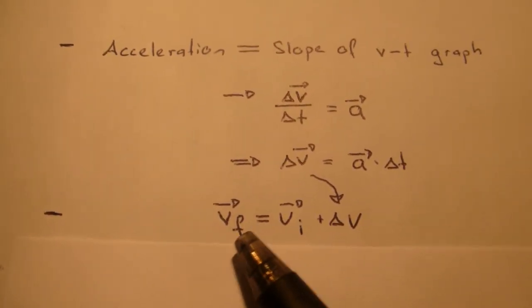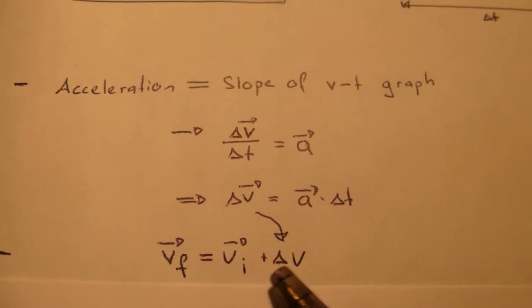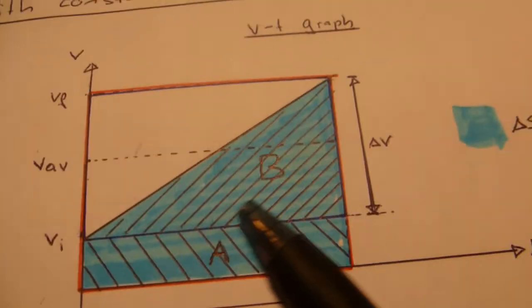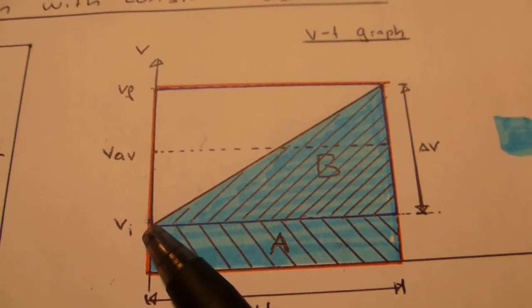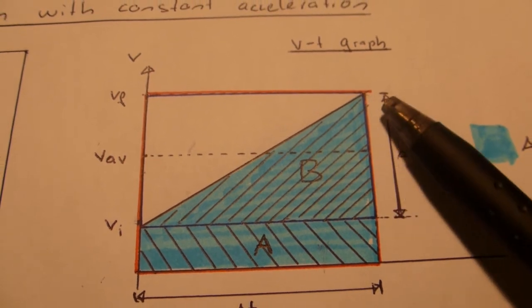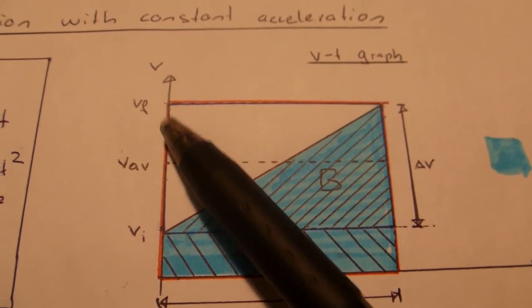We also know that the final velocity is the initial velocity plus the change in velocity.